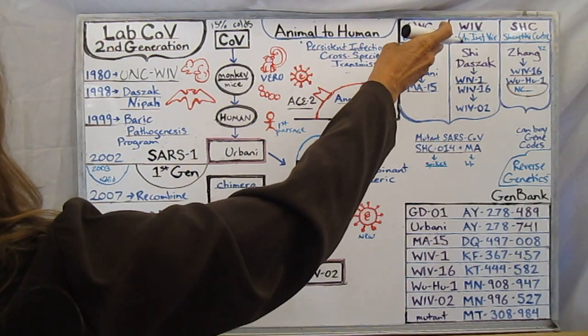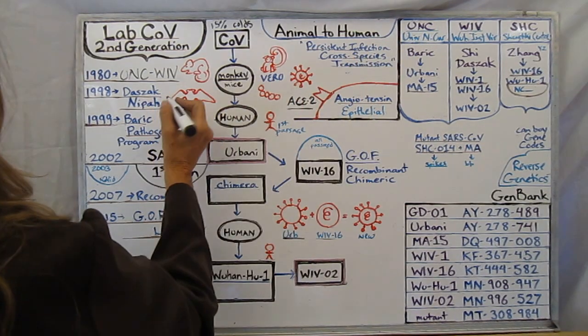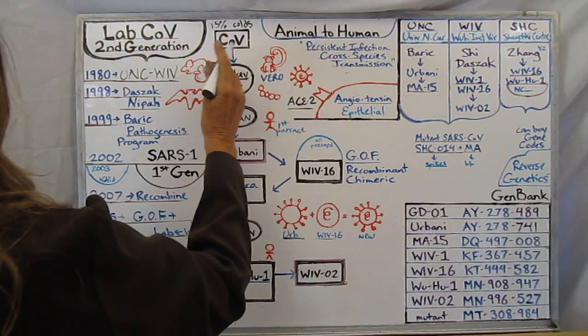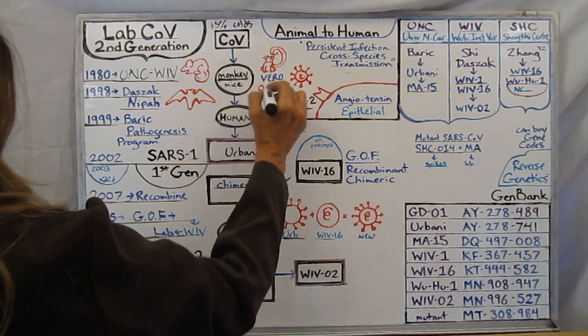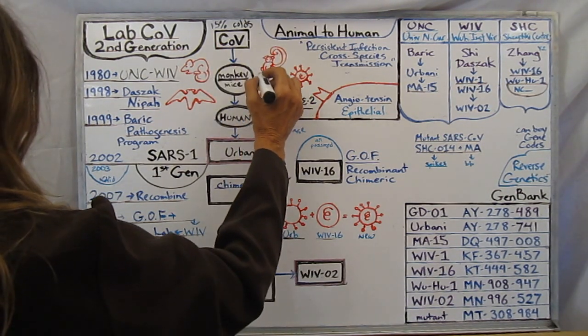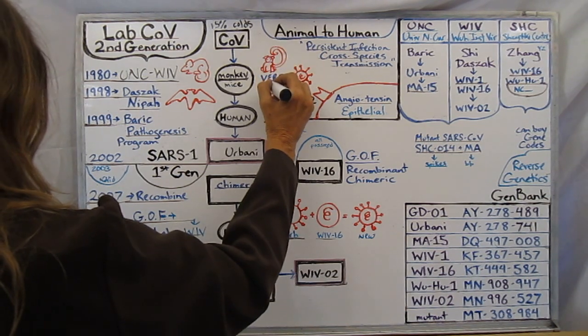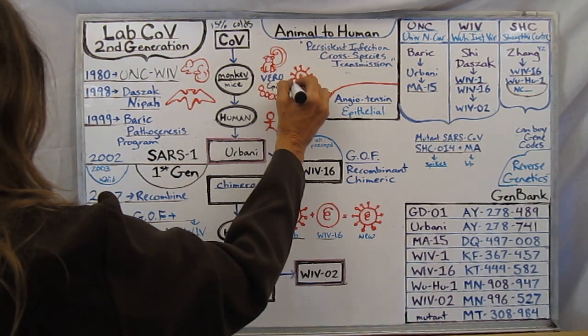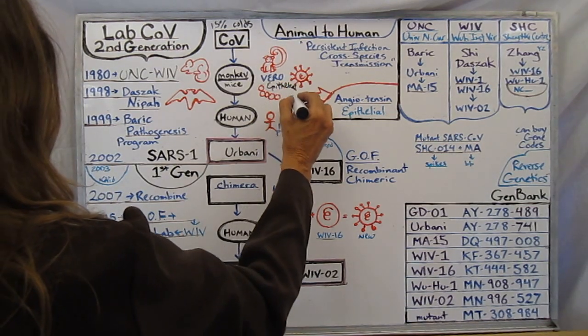Barrick who was director of the University of North Carolina labs, he is the one that was passing the coronavirus through cell cultures such as the vero cells, the renal kidney cells of the monkeys which are epithelial cells which are the inner skin cells that contain the ACE2 receptors.